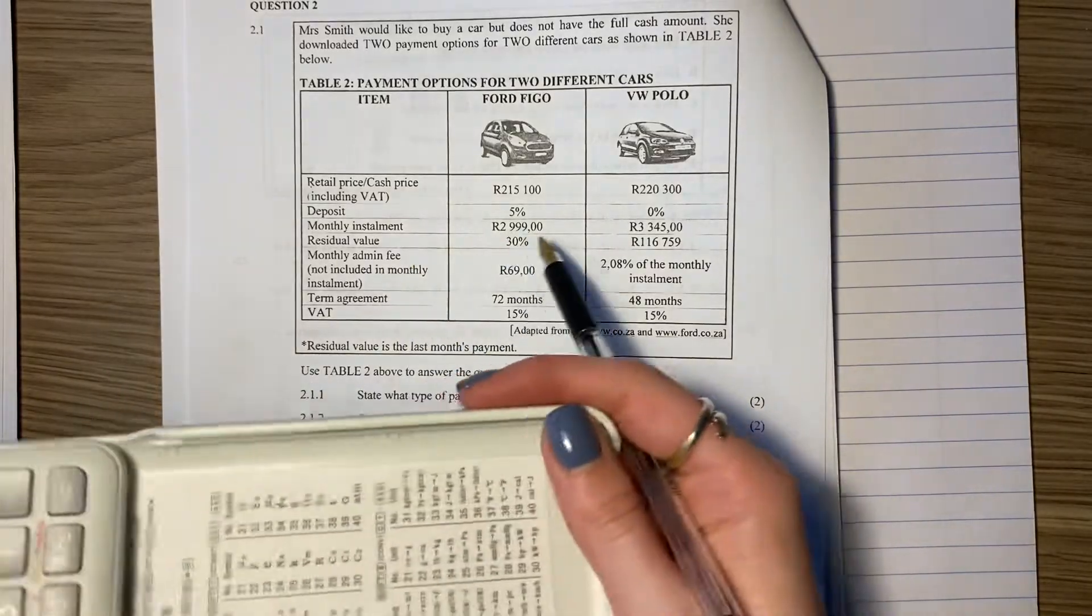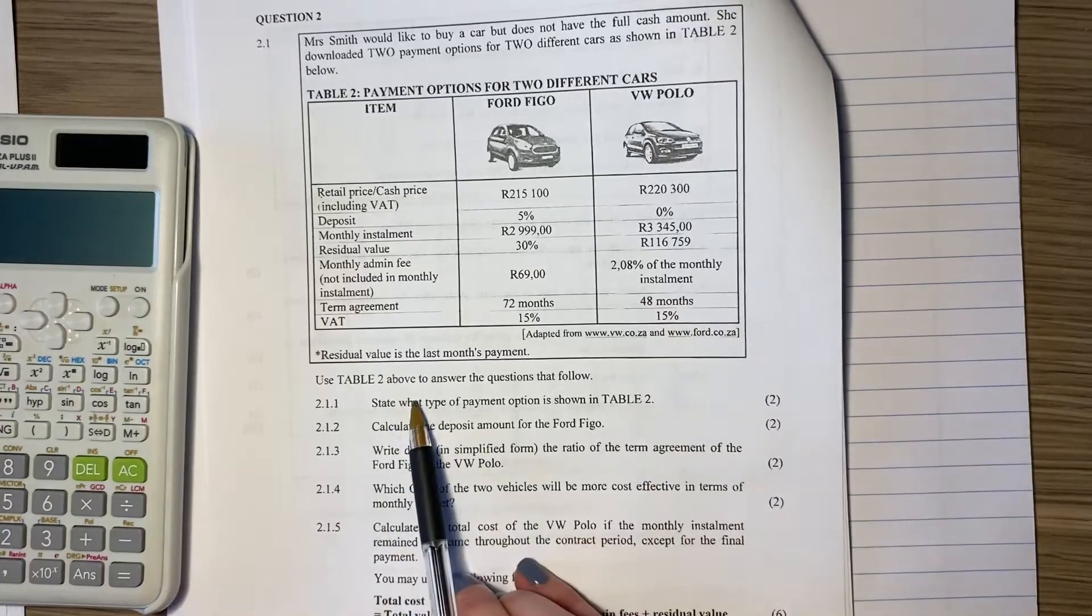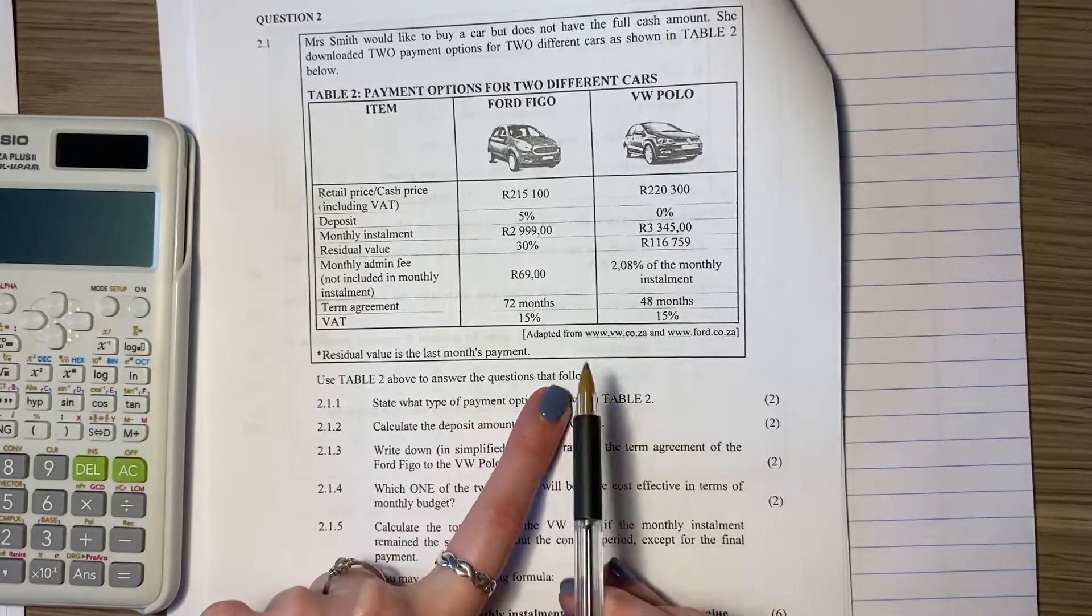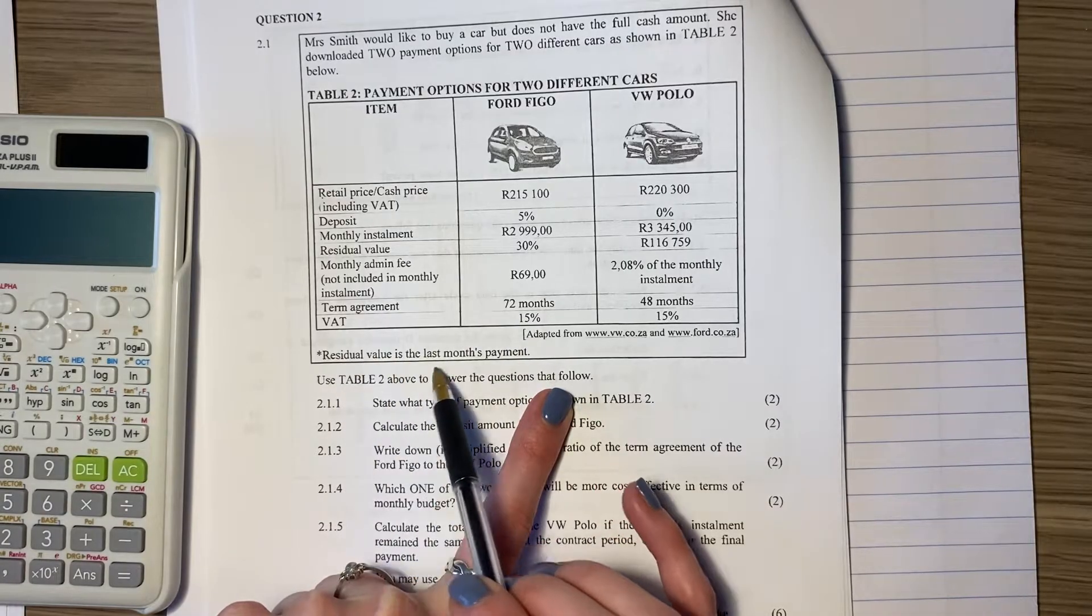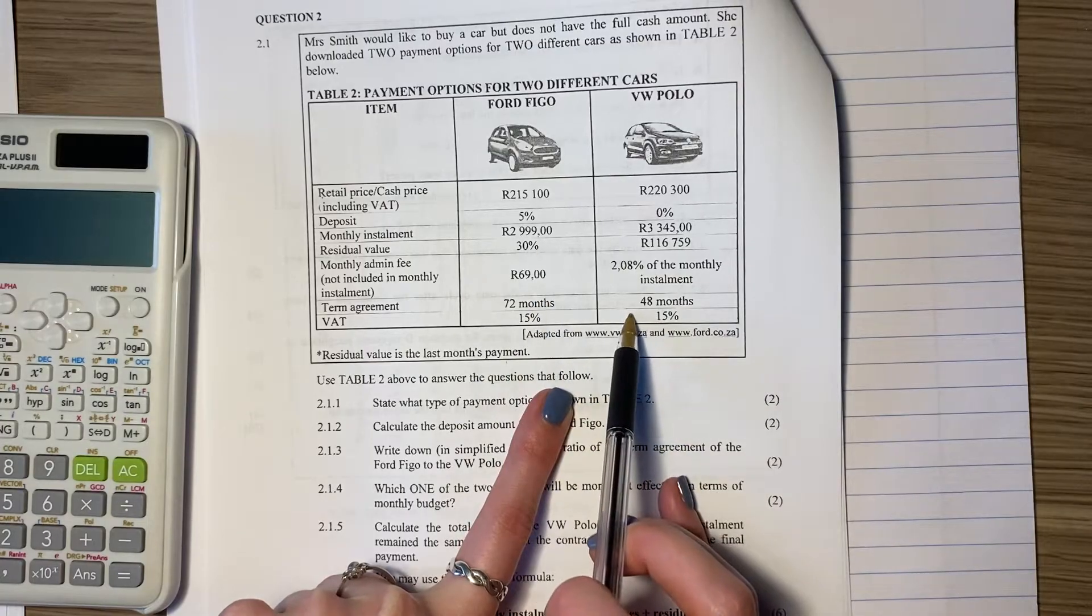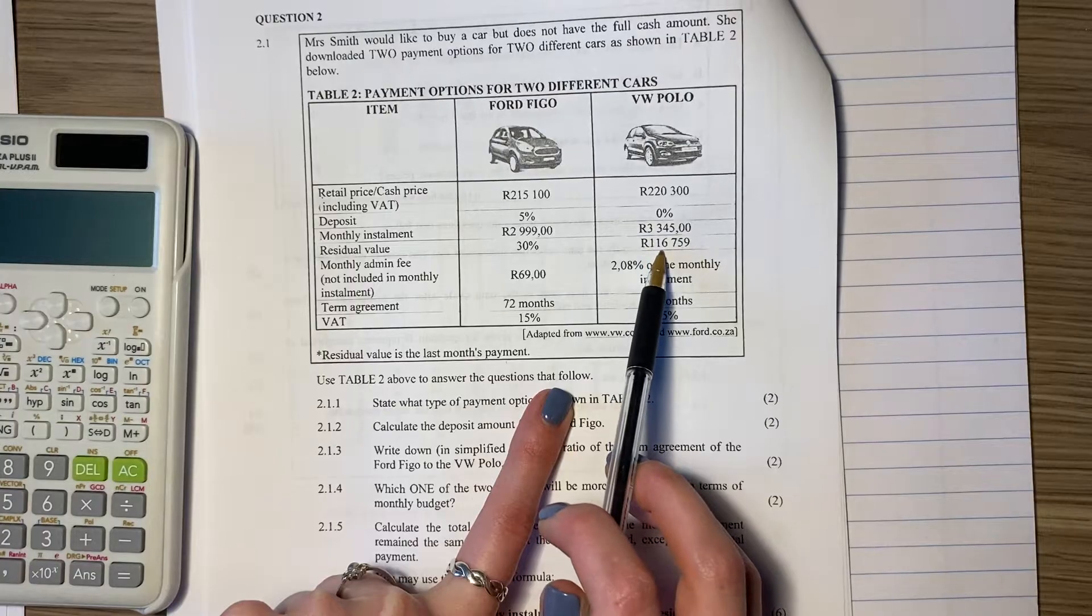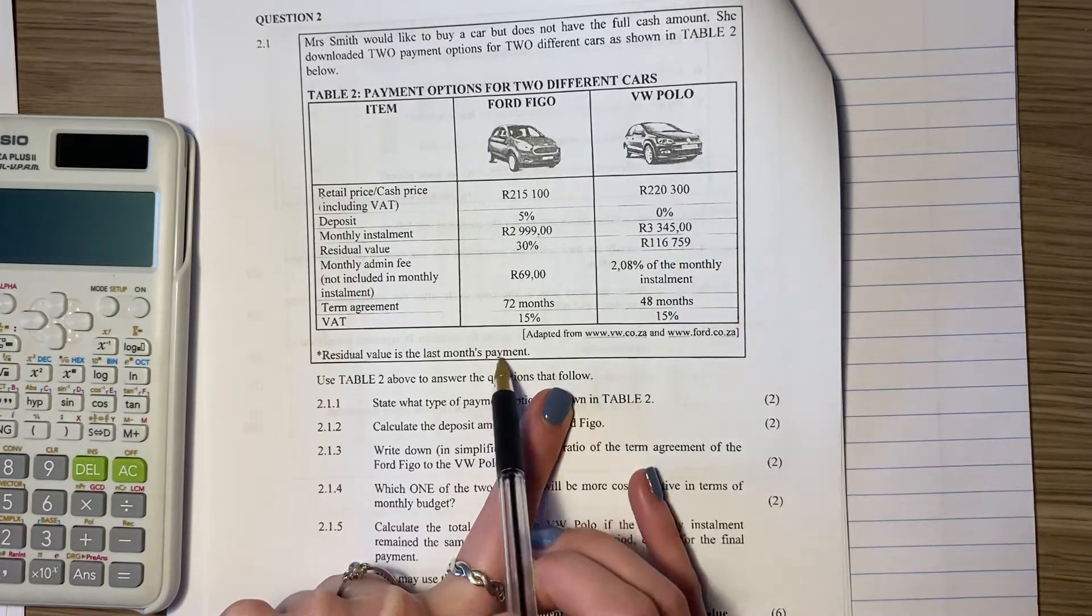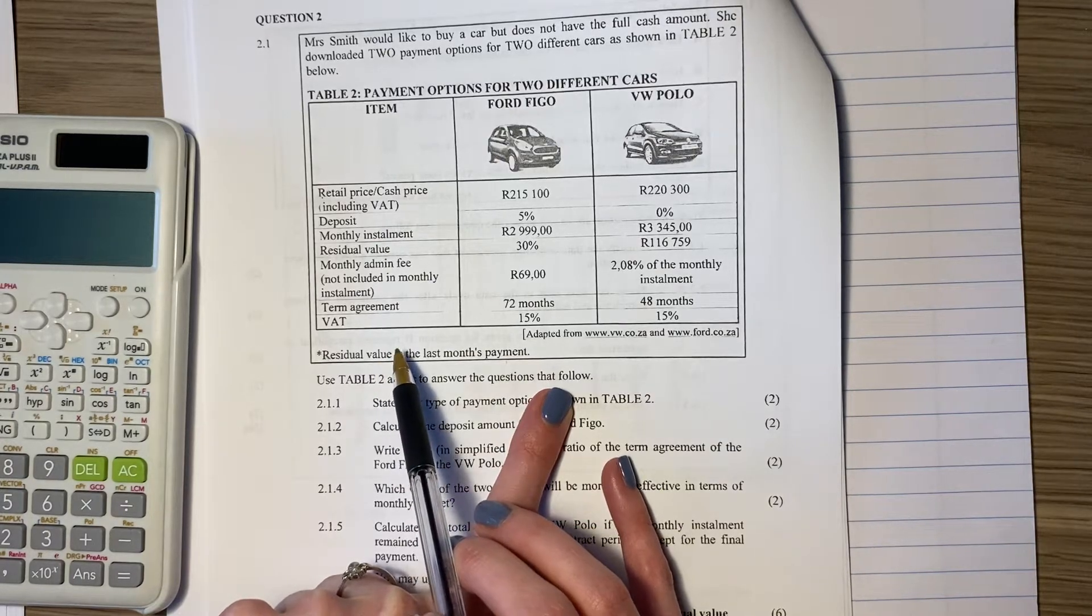Let's just make sure we have our calculator on hand. It says use table two above to answer the questions that follow. Before I move on, please note this little asterisk here. It says residual value is the last month payment. So here where it says 48 payments, it actually means 47 payments of that and then the 48th payment is that, obviously with admin fees on top. Just note that because students often forget about these little asterisk notes at the bottom and they're quite important when doing your calculation.